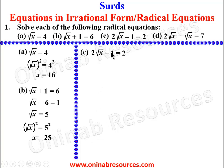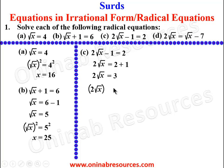For (c), 2√x − 1 = 2. We take the −1 to the right-hand side, so 2√x = 2 + 1 = 3. Squaring both sides: (2√x)² = 3², giving 4x = 9. Dividing both sides by 4, x = 9/4.